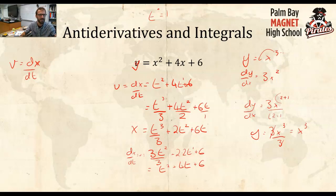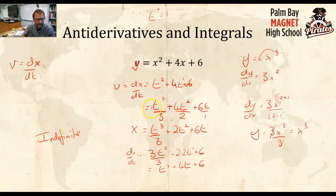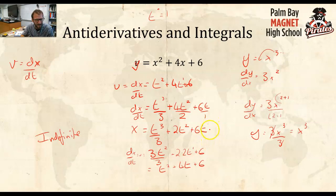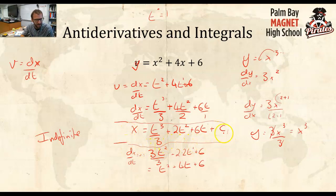However, this is what we call indefinite, because as we went from the velocity function down to the position function via the anti-derivative, there's always the possibility that there is some constant c at the end. When we take the anti-derivative, that constant won't necessarily show up, but it could be there — because when you take the derivative of a constant c, it just becomes 0 and cancels out. So that is the anti-derivative. It has another name: integral.